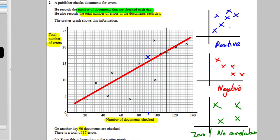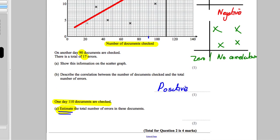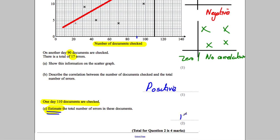How do you use the line of best fit? Well, 110 documents, you draw a line up to your line of best fit and then you read across. So you read across here and to me it looks like that's 19 errors on the document. So you would just write down here that the answer is equal to 19.